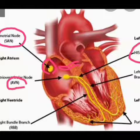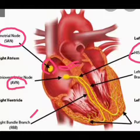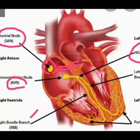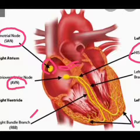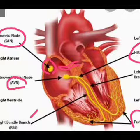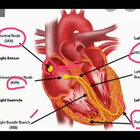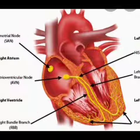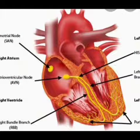From the atrioventricular node, the bundle of His is formed. The bundle of His is divided into right and left parts, known as the left bundle of His and the right bundle of His. These then form numerous fibers known as Purkinje fibers, which are distributed throughout the left and right ventricles and help in the contraction of the ventricle.